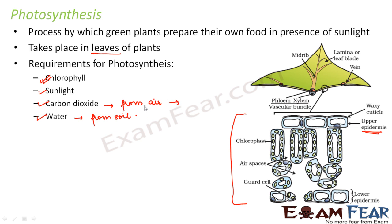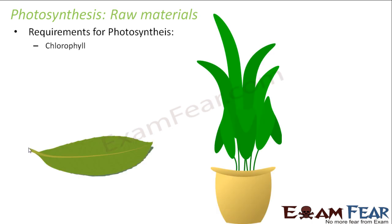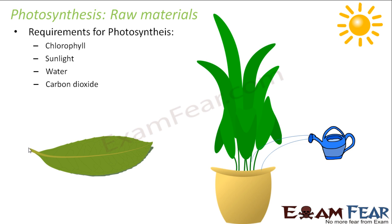Carbon dioxide will be obtained from air through stomata. Now, the food that is prepared is stored in the form of starch. Starch is a polysaccharide — that means too many glucose molecules together form starch. So the food which is prepared is in the form of starch, and the starch is stored in the plants. The requirements for photosynthesis are chlorophyll, sunlight, water, and carbon dioxide.